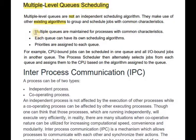Here we have an example. Multiple Queues are maintained for processes with common characteristics. Each Queue can have its own scheduling algorithms. Priorities are assigned to each Queue.